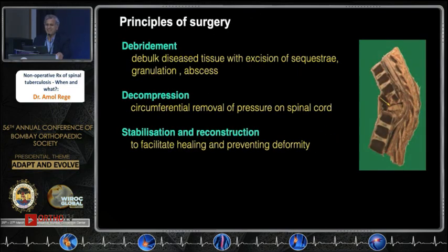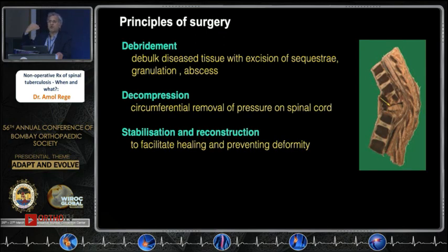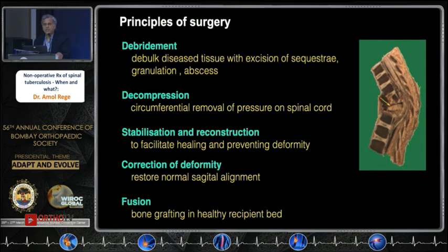If you decide to go ahead with surgery, the principles are essentially: first, debridement — de-bulk the disease tissue. This is not cancer; you don't need to remove every cell. Excise the sequestrae, granulation tissue, and abscesses. Then if there is a neurological deficit, decompress the cord circumferentially — you will usually find a membrane around the cord, and you excise that membrane, which is very important. Then stabilize the spine adequately: two levels above and two levels below if going posterior, reconstruct both columns of the spine, correct the kyphosis, and the basic aim is fusion — bone grafting in a healthy recipient bed.